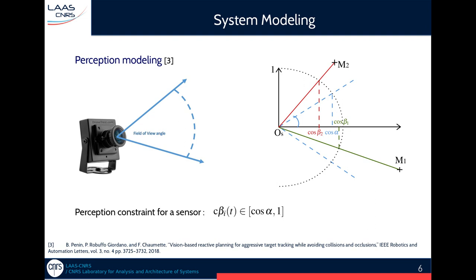We can now express a set of constraints for our sensor. So for each feature that we want to track, the cosine of this angle that we call beta will have to be greater than the cosine of alpha.